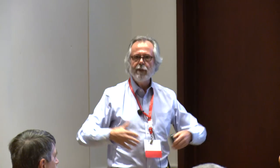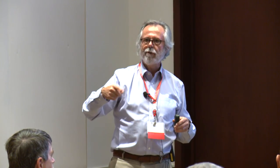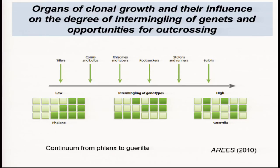Geitonogamy is not an adaptive thing — it's usually an incidental byproduct of growth. As the organism gets bigger, there are more opportunities for transfer of pollen between flowers within a genet, and also more opportunities for outcrossing through more intermingling of genets within a population.